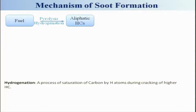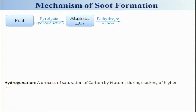You may also get some aliphatic hydrocarbons. I have described this process in a very linear way, but that is not really how it happens. Dehydrogenation means basically removing the hydrogen atom from these aliphatic compounds, making way for double bonds or acetylene-kind structures.